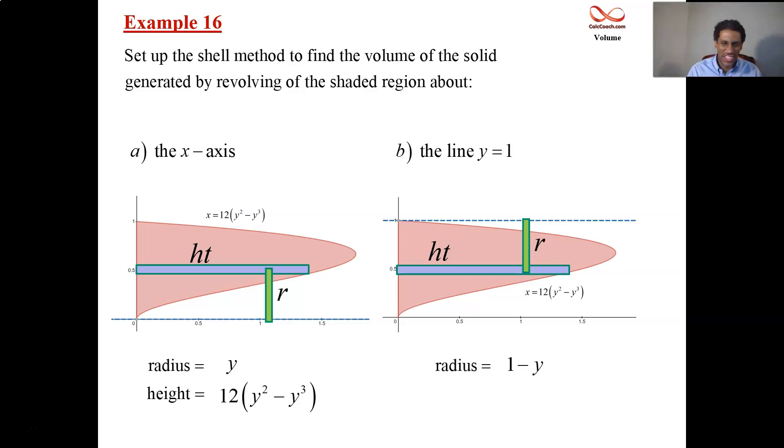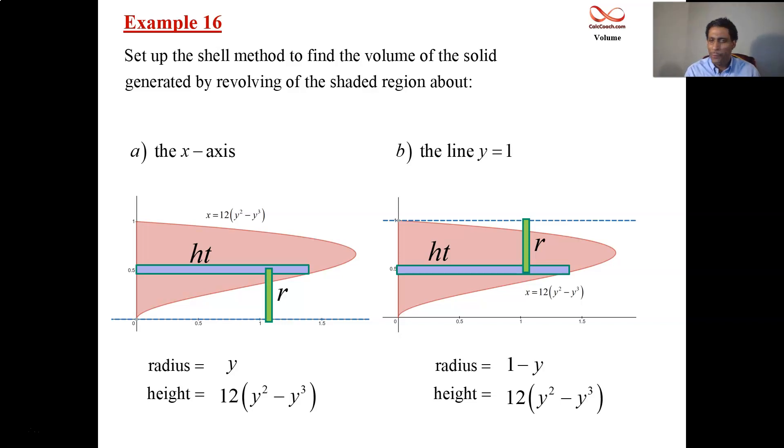And the height is just the same height. 12 times the quantity of y squared minus y cubed. Alright, good. Now, let's move it up even higher. Why not? What about having the line y equals 2?